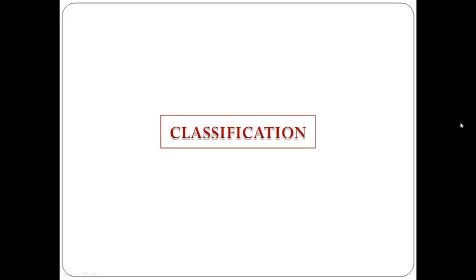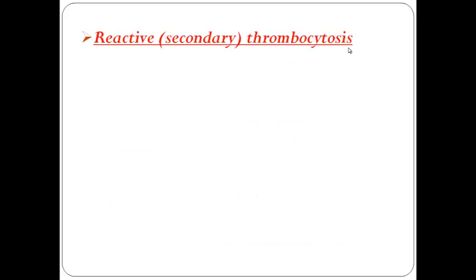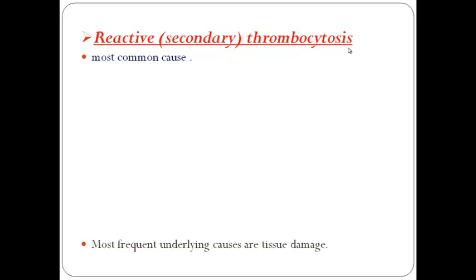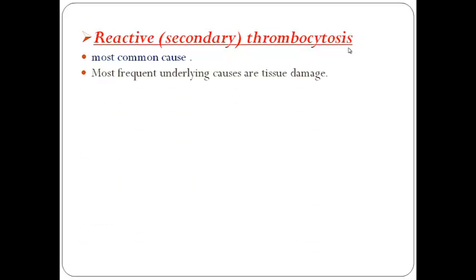The classification of thrombocytosis includes three categories: reactive thrombocytosis (also called secondary thrombocytosis), familial thrombocytosis, and clonal thrombocytosis. Reactive thrombocytosis is the most common cause, and the most frequent underlying causes are tissue damage — such as major surgery, infections, cancer, and chronic inflammation.